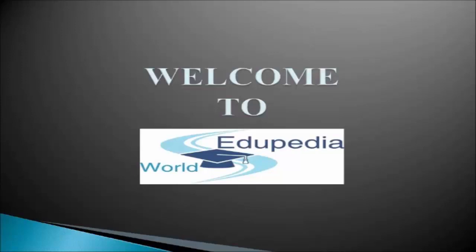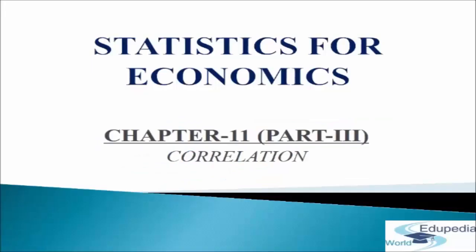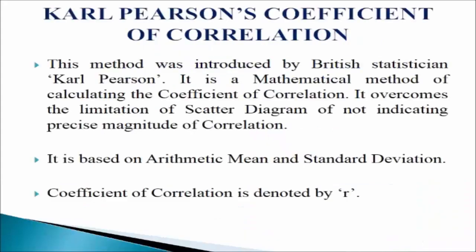Welcome to Edupedia World. In this module we will learn about Karl Pearson's coefficient of correlation. This method was introduced by British statistician Karl Pearson. He was the first person to give a mathematical formula for measuring the degree of relationship between two variables in 1890. It is a mathematical quantitative method of calculating the coefficient of correlation.